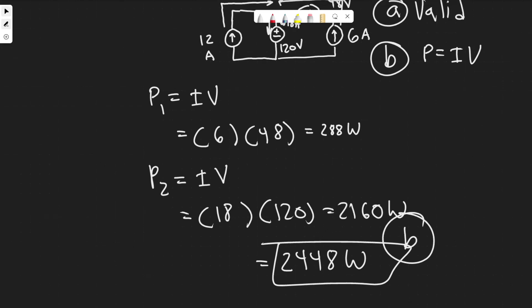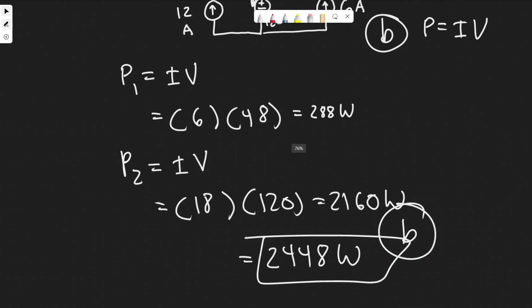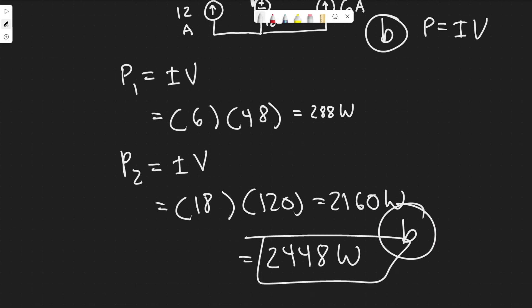That's a really important rule for circuits: the power dissipated equals the power developed. There are definitely other ways to do it, but this way is the easiest to understand. So 2448 watts is your answer, and hopefully you found this useful.